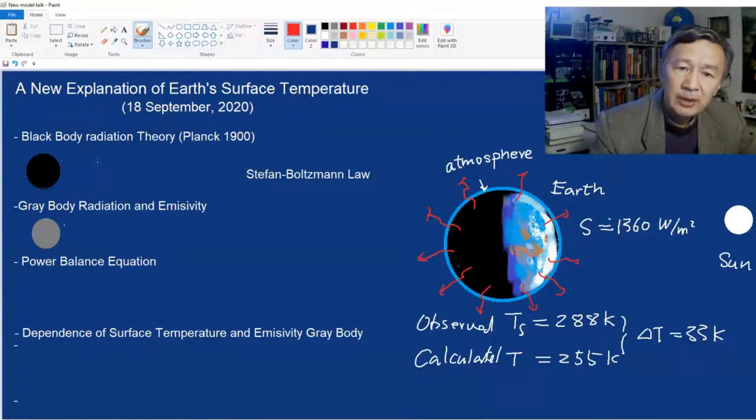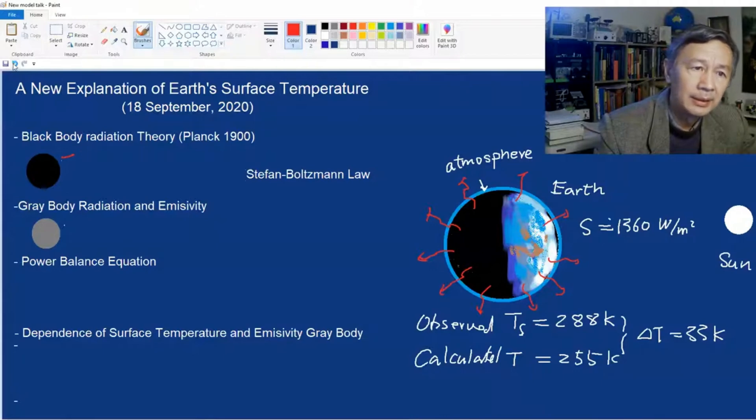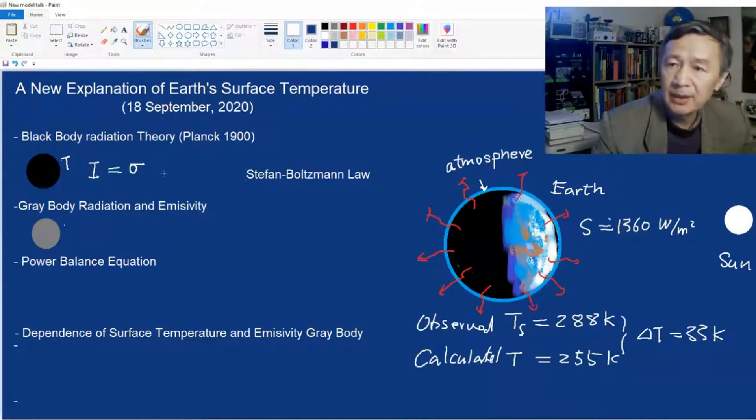The Stefan-Boltzmann law simply says if the black body has a surface temperature of T, then radiation intensity can be written as I equals sigma times T to the power of 4. Sigma is a constant known as the Stefan-Boltzmann constant. In order to specify this particular relation, I put the B here for black body.